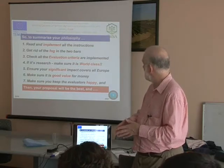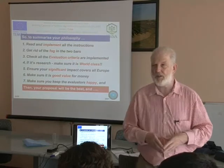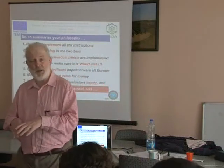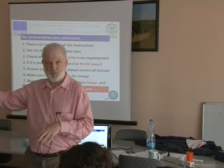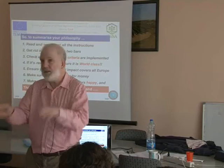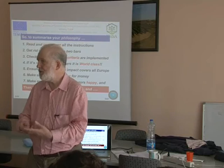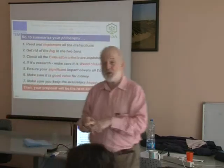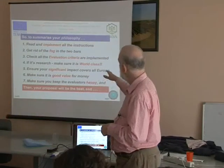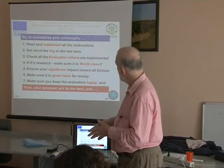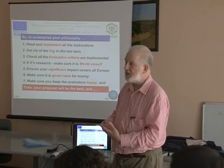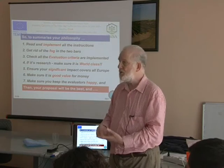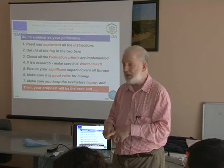Ensure your significant impact covers all of Europe. For a Horizon 2020 project collaborating with groups across Europe, make sure your consortium partners cover different parts of Europe. You cannot afford to have your impact regionalized to just South East Europe — if another proposal covers more European countries, you may come second and not get the money. You also have to make sure your proposal is good value for money: if another proposal claims the same impact but is cheaper, yours will come second.